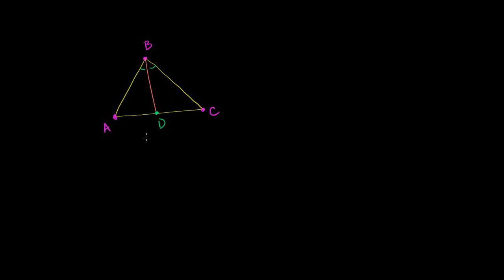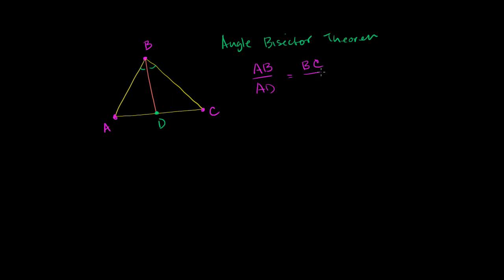Let me call this point down here point D. The angle bisector theorem tells us that the ratio between the sides that aren't this bisector — so when I put this angle bisector here, it created two smaller triangles out of that larger one. The angle bisector theorem tells us the ratios between the other sides of these two triangles are going to be the same. So it tells us that the ratio of AB to AD is going to be equal to the ratio of BC to CD.